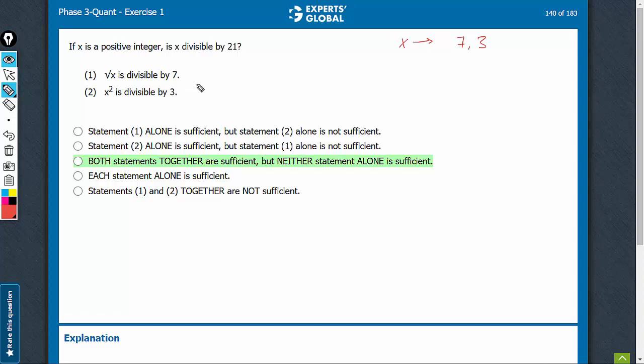Look at statement 1: root x is divisible by 7. That means x is divisible by 7 squared. But still, we don't know whether x is a multiple of 3. Yes and no, both are possible. So statement 1 is not sufficient.